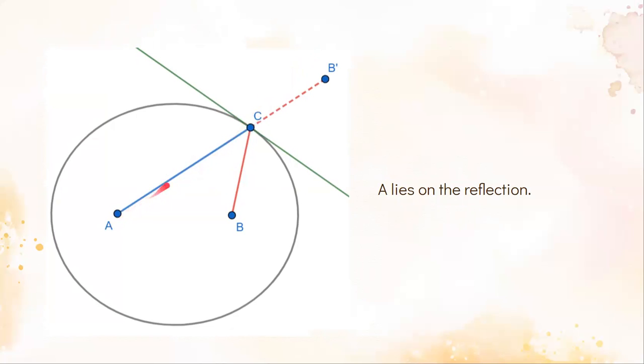Since A, C, and B' are collinear, A must lie on the reflection of the line BC. And so we're done. We've proven that whichever way we send something from B and bounce it off the edge of the ellipse, we will end up at point A.